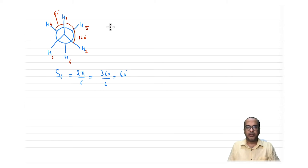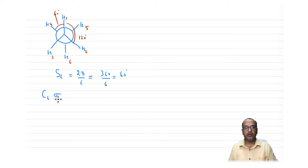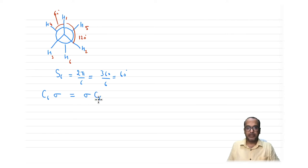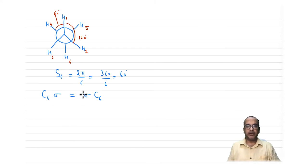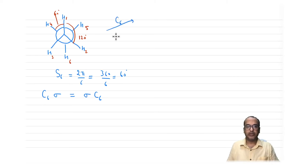Let us perform the C6 operation first. S6 must be realized by doing C6 first or σ first, since both operators commute. So let us actually do both ways to confirm. We start by applying C6.